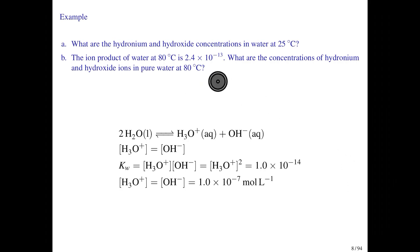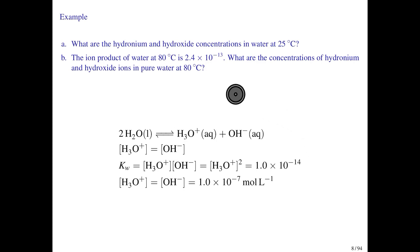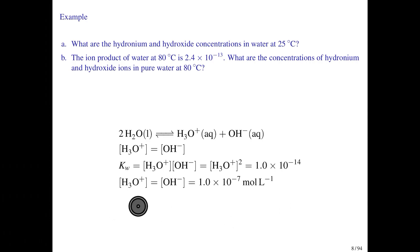As a follow-up problem, if you change the temperature, that changes the equilibrium constant. In this case Kw increases to 2.4×10⁻¹³, and you would solve the problem in the same way, replacing 1×10⁻¹⁴ with the new value, which gives different concentrations for the hydronium and hydroxide.